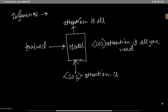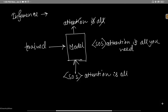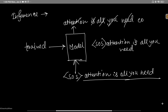'Is' is again added back to the input context, and the model produces 'all.' Once 'all' is produced, it's added back to the input, increasing the context length. With this growing context the model produces 'you,' then 'need,' and once 'need' is added the model produces the end-of-sentence token. This is the process during the inference phase for next word token prediction.